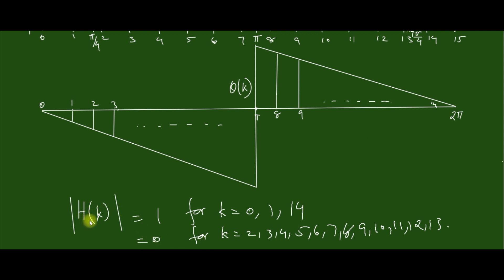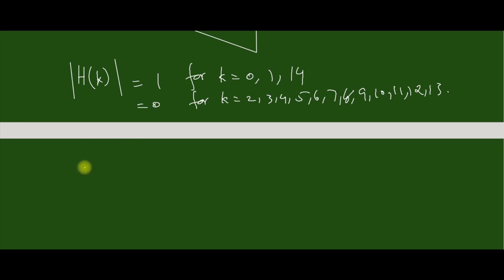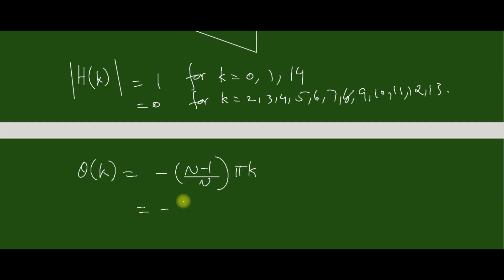The modulus of the magnitude equals 1 for k equal to 0, 1, and 14, and equals 0 for all other values of k. The phase value phi(k) is given by minus (N-1)/N times pi times k, which equals minus (14/15) times pi times k, for k up to the half point, that is up to 7. In order to determine h(n), this first half of the data is sufficient.